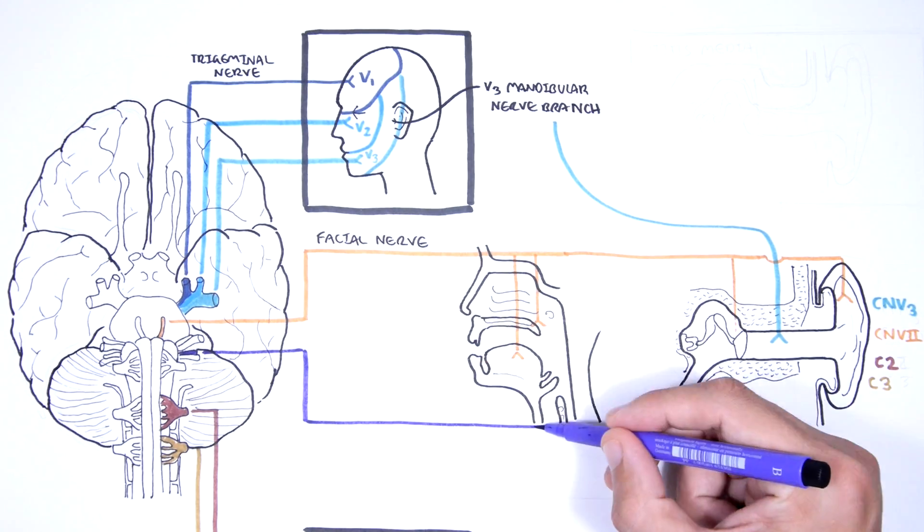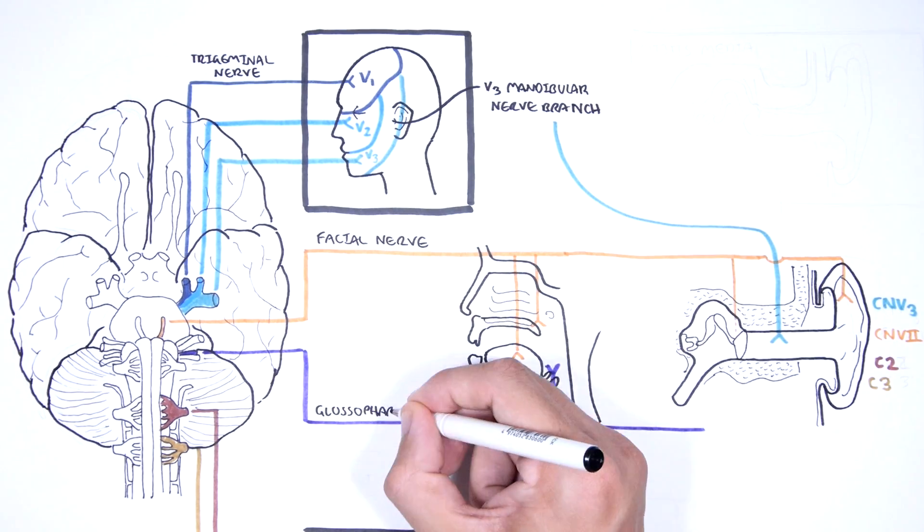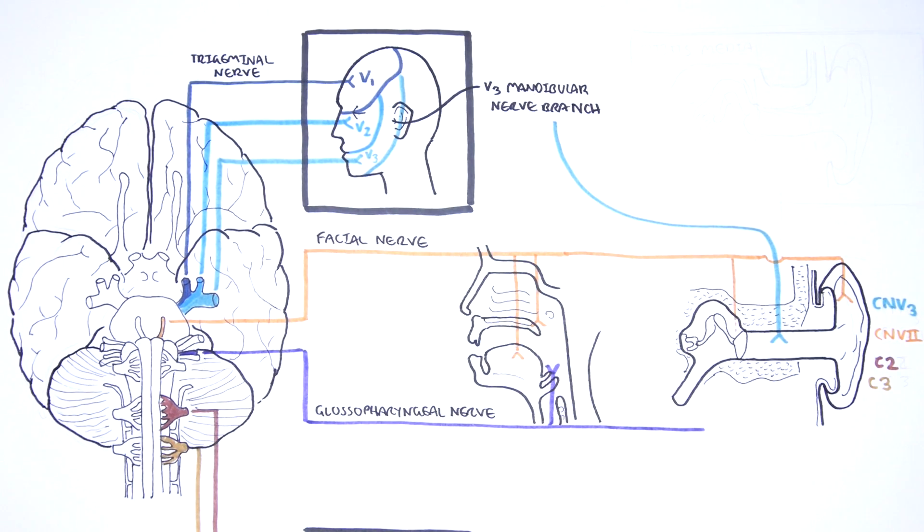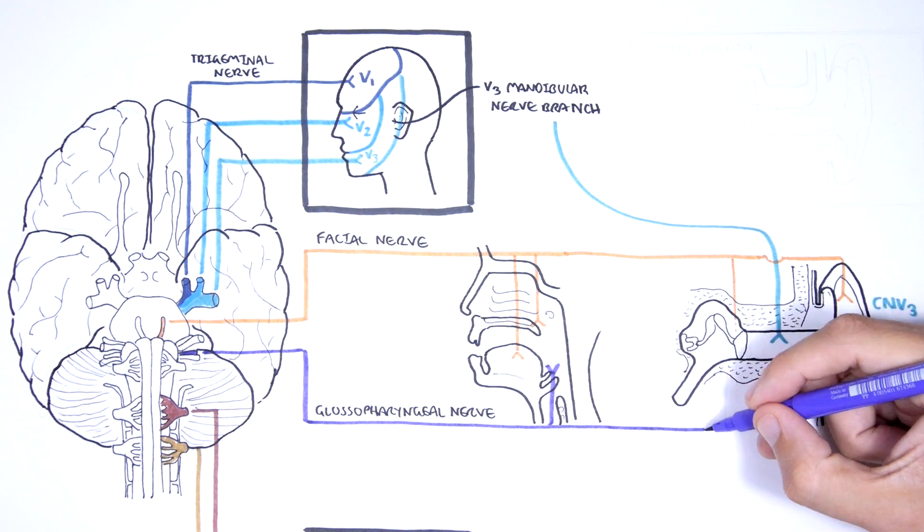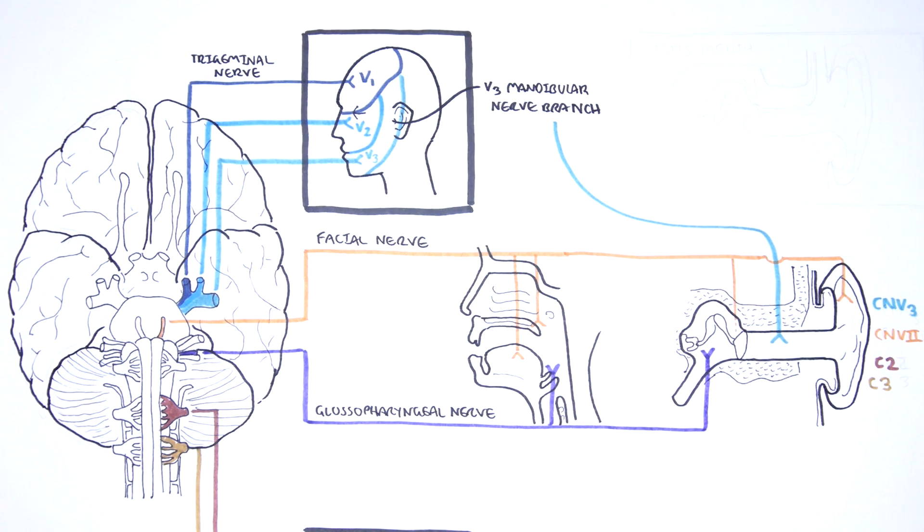The glossopharyngeal nerve, cranial nerve number nine, innervates the oropharynx, the carotid bodies and sinus, the posterior one third of the tongue as well, but it also innervates the middle ear cavity and the eustachian tube.